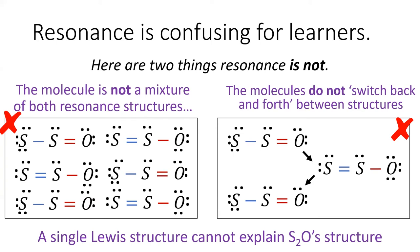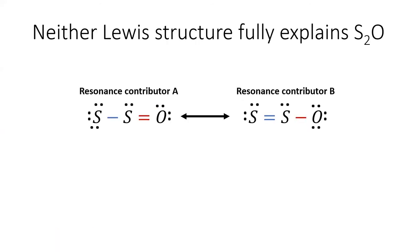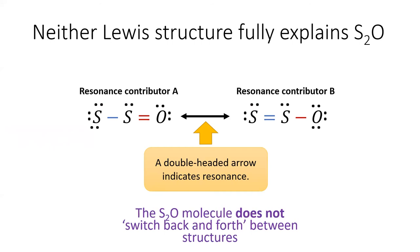Instead, the molecule has a combination of the properties of each of the Lewis structures of the resonance contributors. While neither of these structures fully explains S2O's bonding, we can imagine the real structure is a combination of these two. We use a double-headed arrow to indicate resonance. Even though we use an arrow, the molecule is not switching back and forth between these structures. Instead, its true structure is somewhere in between these representations.